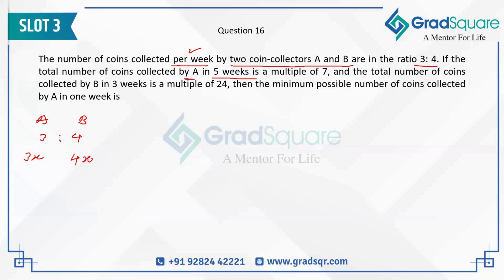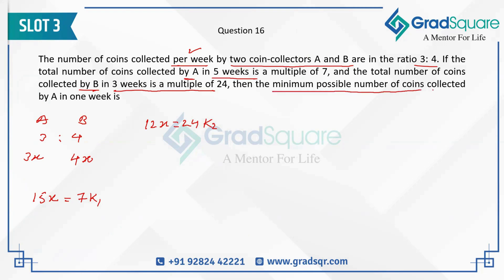If the total number of coins collected by A in five weeks is 15x, that is a multiple of 7, so that should be 7k₁. And the total number of coins collected by B in three weeks is going to be 12x, which equals a multiple of 24, that is 24k₂.